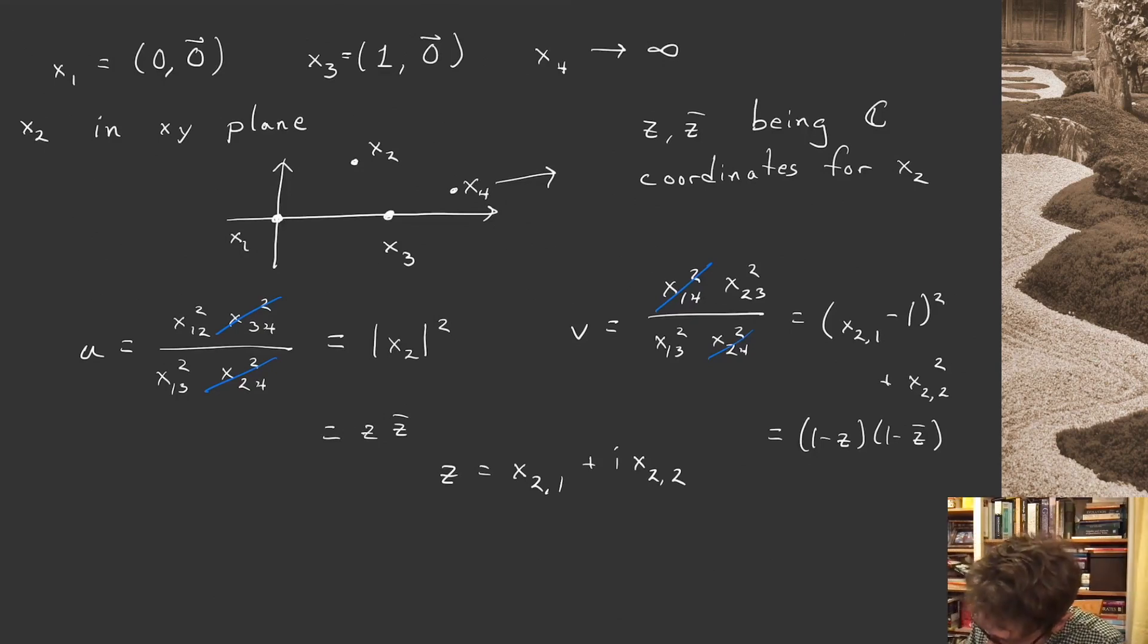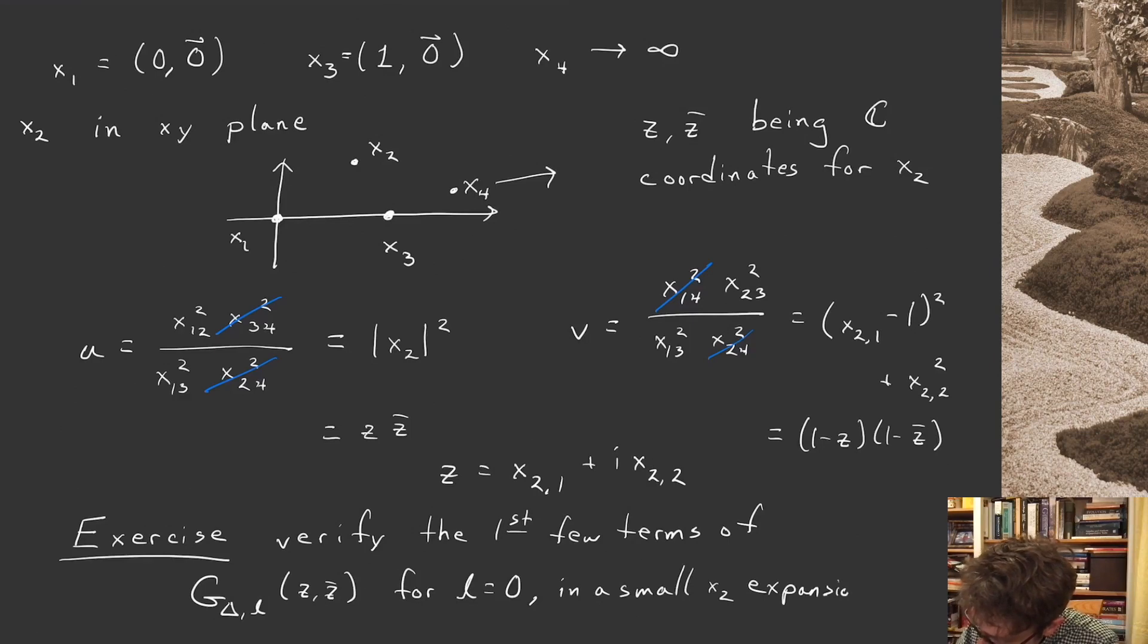That's about all I wanted to say. I'll leave you with an exercise. The exercise is to verify the first few terms of g delta l for scalars for l equals 0 in a small x2 expansion. So we have an expansion for these operator product expansion functions C, these capital C deltas. So given those, multiply two together, expand it out, see if you can recover this conformal block, at least the first few terms of it in this expansion. Next week, we'll come back with our final week discussing conformal field theory before we dive into supersymmetry. Next week, we'll discuss the bootstrap and how to constrain the form of four-point functions even further, and moreover to constrain the space of conformal field theories more ambitiously. See you next week.